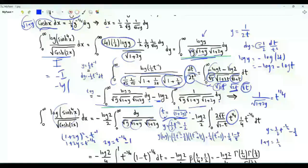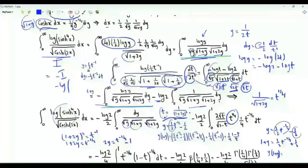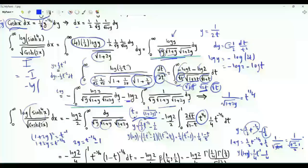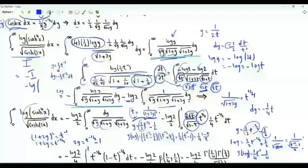From the expression for y, we get 1 plus y equal to one-half t to the minus 1/2 plus one-half. Then y times (1 plus y) equals the square of this expression minus one-fourth, which is one-fourth t to the minus 1 minus one-fourth. Under the square root we get the square root of (t to the minus 1 minus 1), divided by 2. Multiplying upstairs and downstairs by 2 times the square root of t gives 2 times the square root of t divided by the square root of (1 minus t). Also, dy equals minus one-fourth t to the minus 3/2 dt.